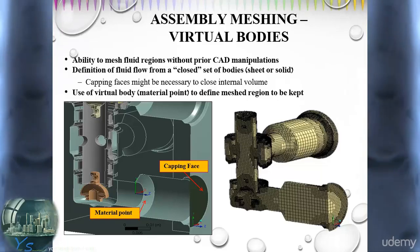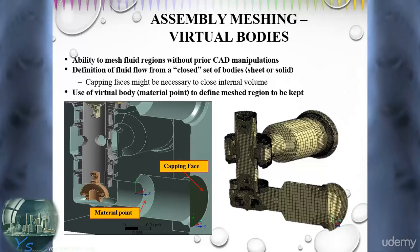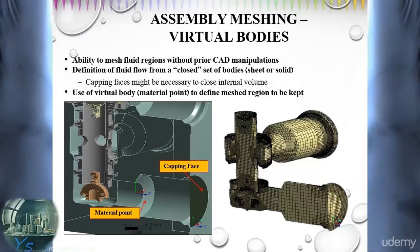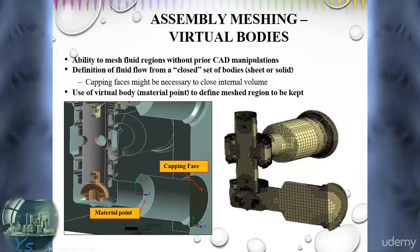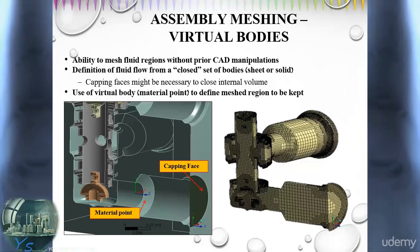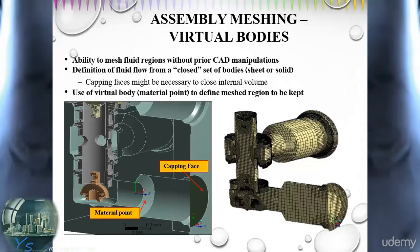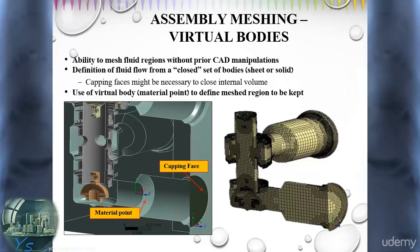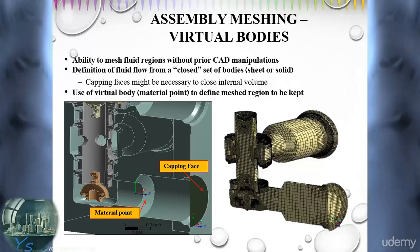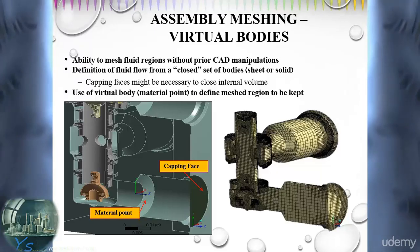All that is left to do is to create a material point in ANSYS Meshing. That point is a user-defined coordinate system that should be located well within the void of the new fluid body. We have to make sure that it does not touch any face or edge, because this will have a negative impact on the meshing procedure.